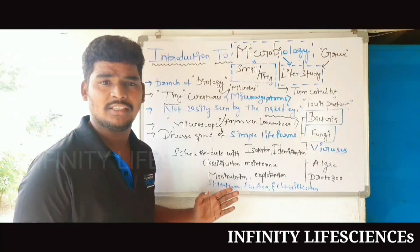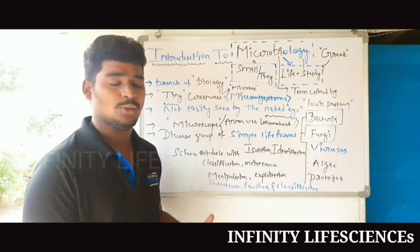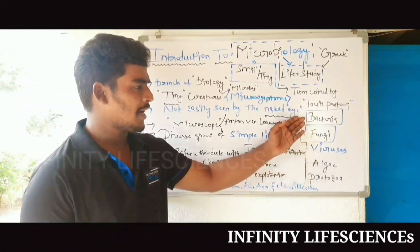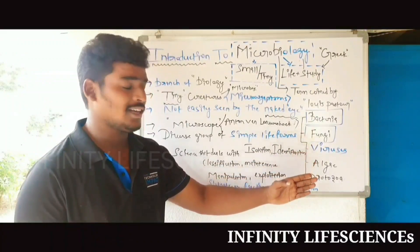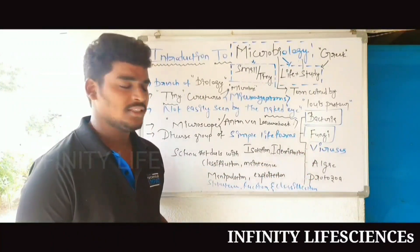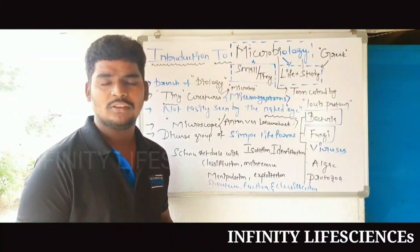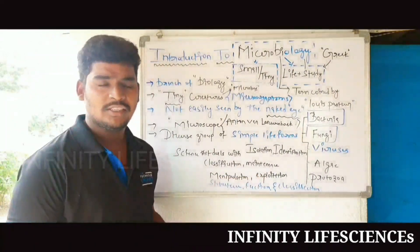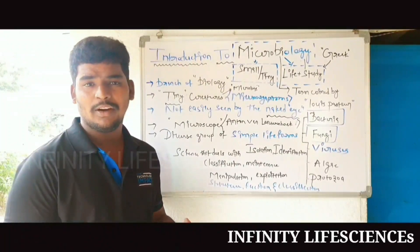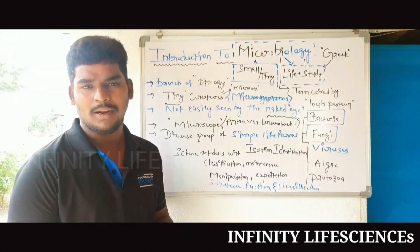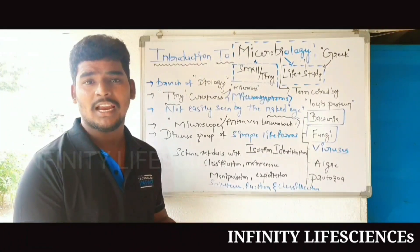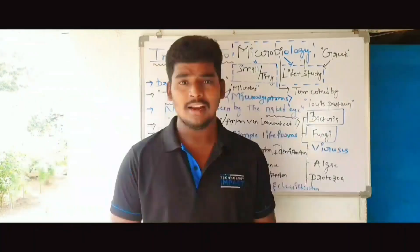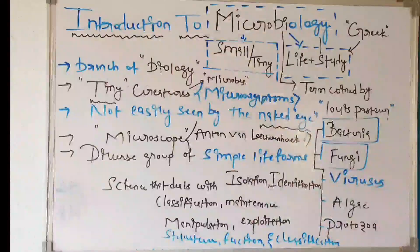Classification is the process of classifying organisms — here we classify them into bacteria, fungi, viruses, algae, and protozoa. Maintenance is the process of preserving a condition. Manipulation means we exploit, influence, control, and alter the microorganisms in microbiology.